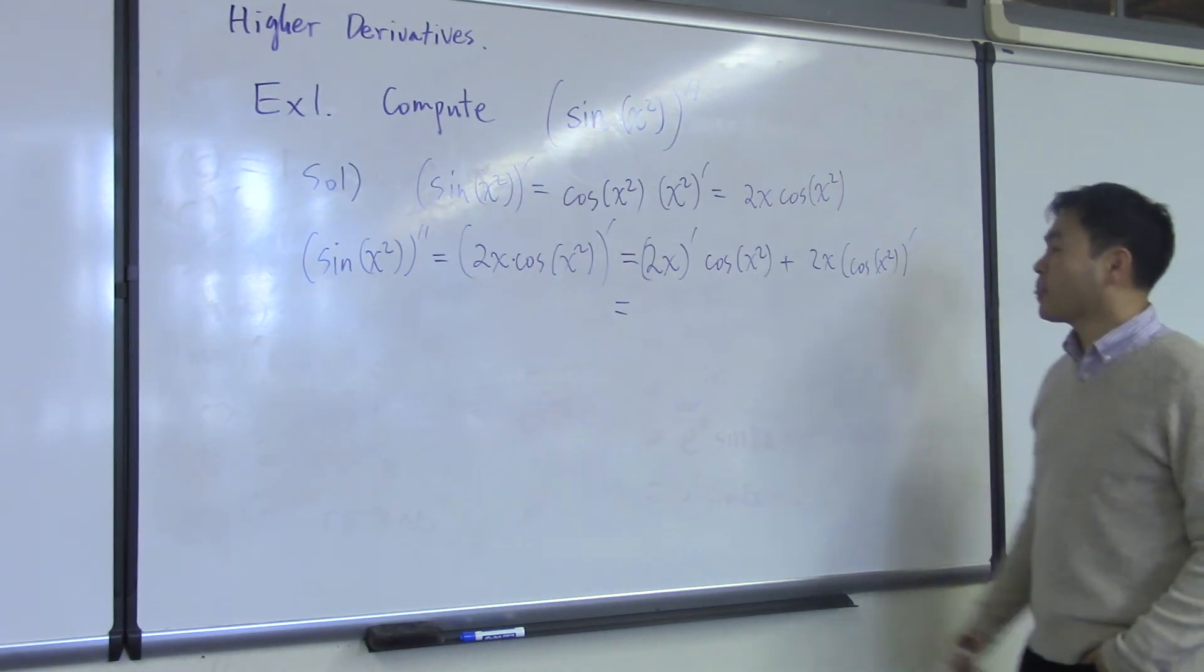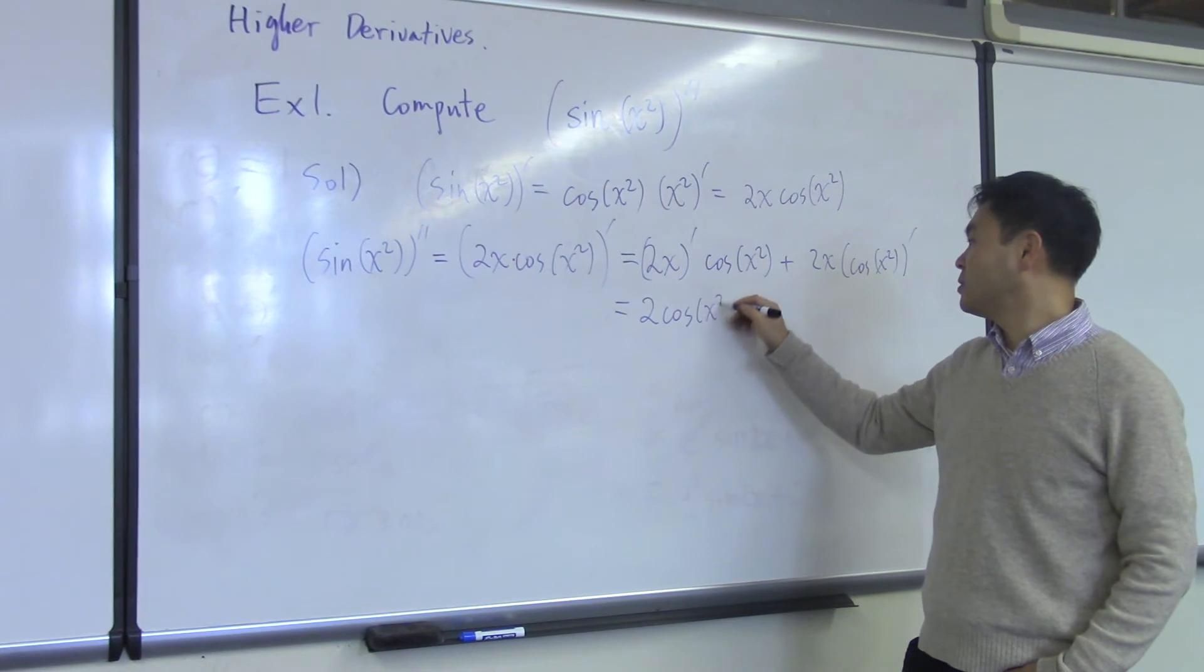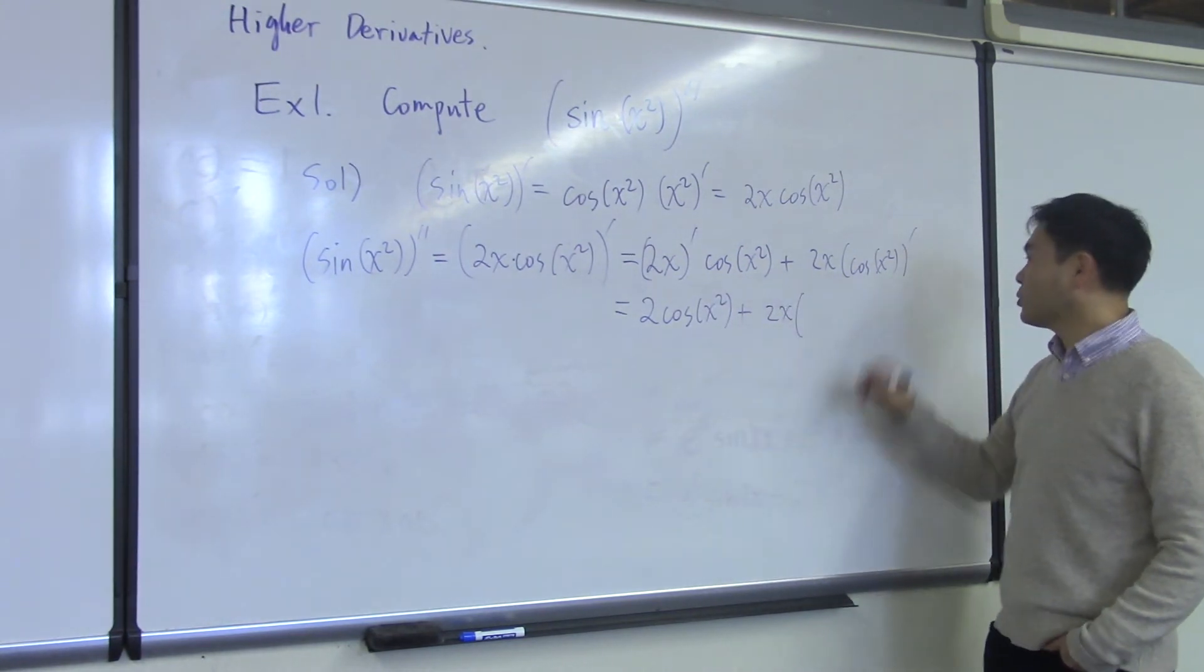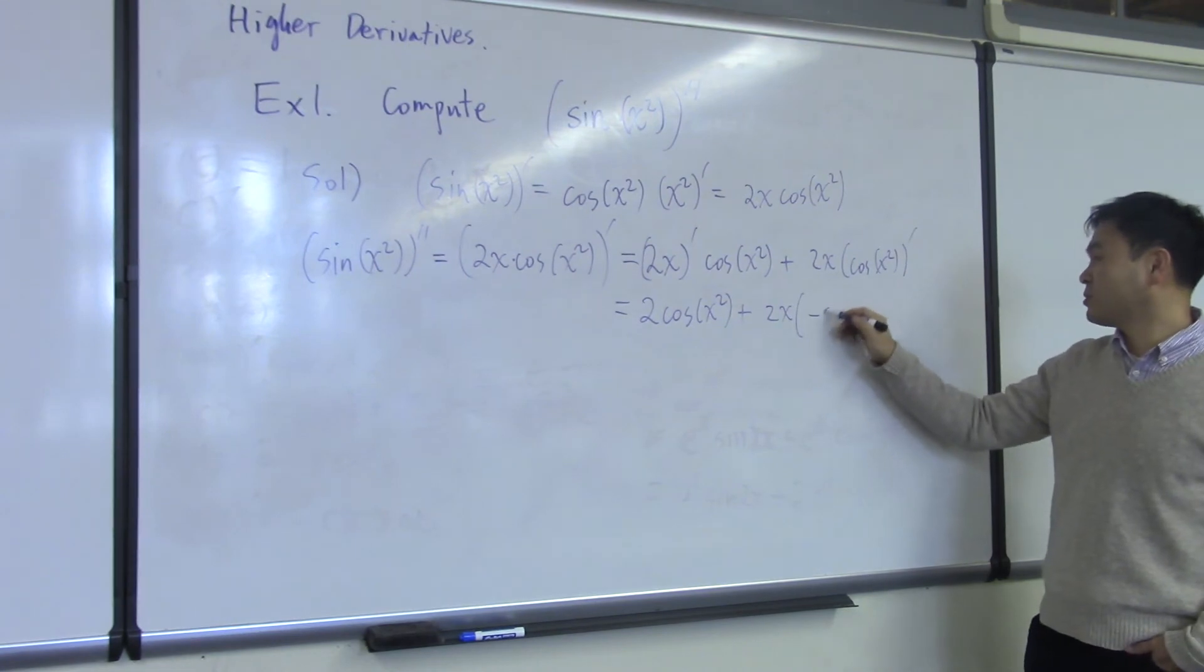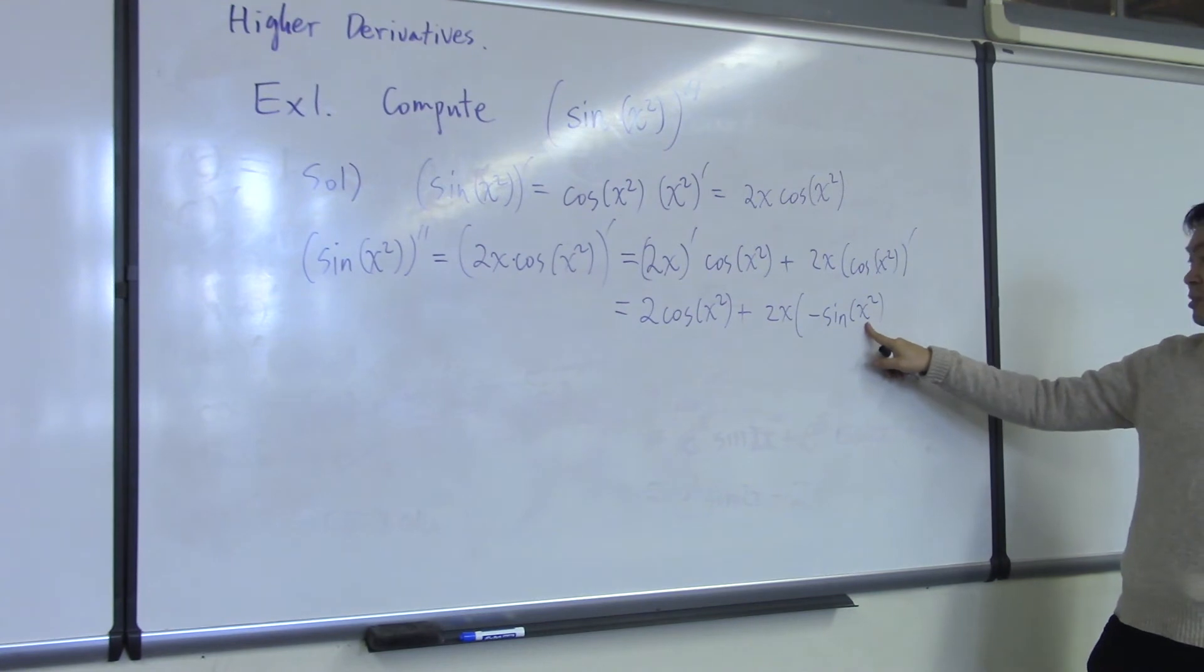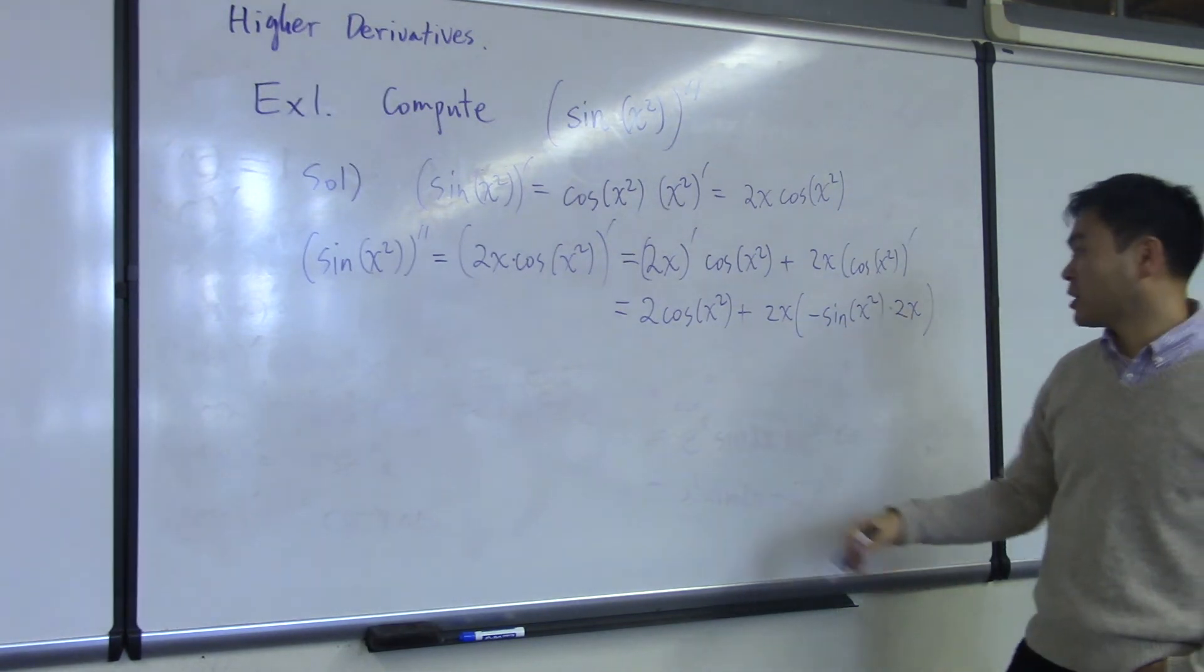So then 2x differentiates to 2. Cosine x differentiates to negative sine x squared, but again, x squared is a nested function. You pull that outside and differentiate. The derivative of the inside function is 2x. That's multiplied by the inside.